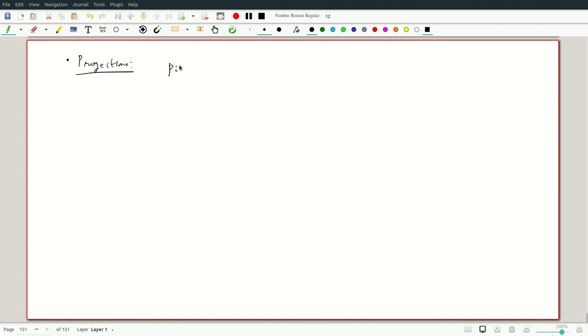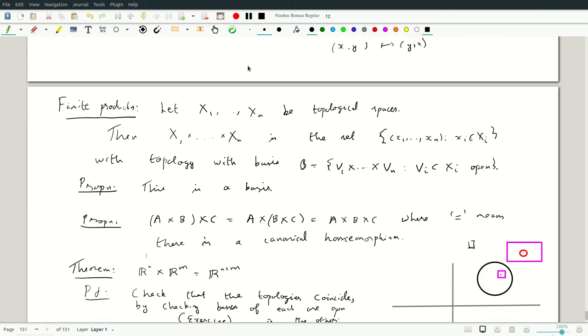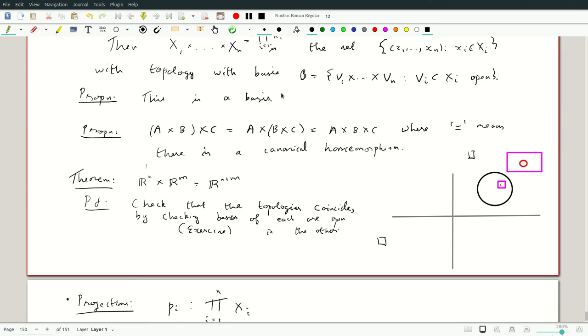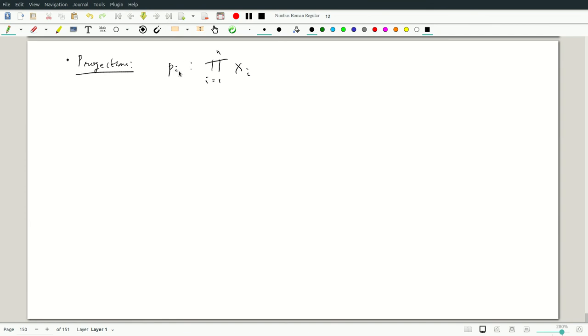We have pᵢ which will map this product i equals 1 to n of Xᵢ, which I think I previously wrote as just X₁ product Xₙ. More succinct way of writing it is i equals 1 to n of Xᵢ, and writing it this way, we get rid of dependence on the order. Eventually, you can have any index set. So, we have a pᵢ which maps, let us say pⱼ which maps this to Xⱼ. So pⱼ of course, we know is X₁, Xⱼ, sorry Xₙ maps to Xⱼ. Let us clear this up. What can we say about this? We can say this is continuous.